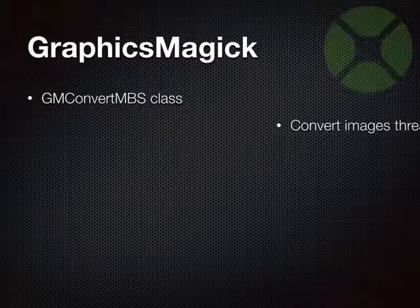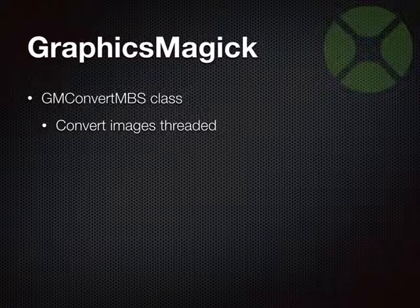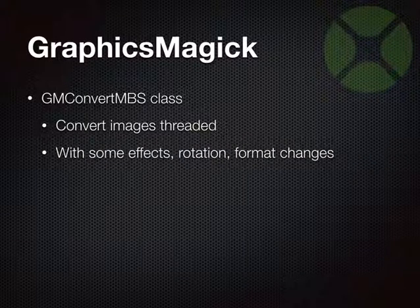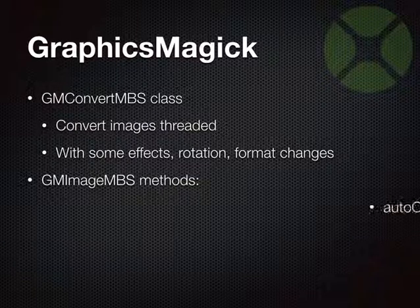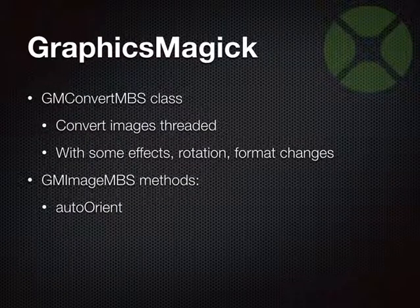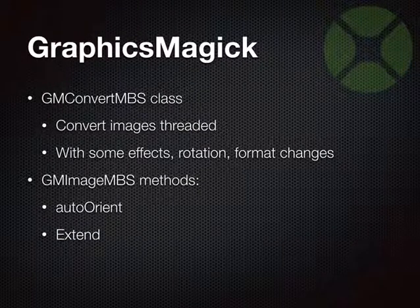We have enhancements to GraphicsMagick functions. We got a GMConvert class that allows you to convert images from one format to another, running threaded on a helper thread so it doesn't block your user interface. You can use several CPUs to convert several images in parallel. You can apply effects, rotation, and format changes like black and white or color space conversion in the background. We also got GMImage methods — for example, auto-orient uses metadata from a picture to detect if it's rotated and rotates it straight. With extend, you can add extra space on your image and write some text.